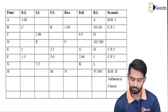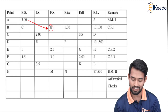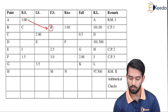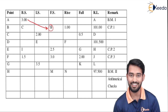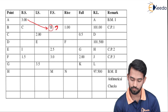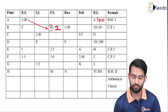Next we have to calculate backside and foreside — there are two missing entries. We can calculate foreside by using the backside reading and rise. The foreside will be equal to backside minus rise. As we know the backside and rise, the answer will be 3 minus 1 equal to 2. We fill the reading over here, so 100 and 2.